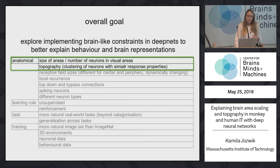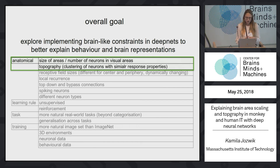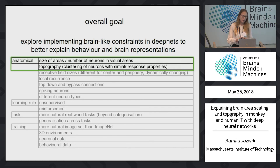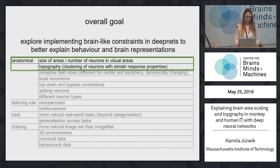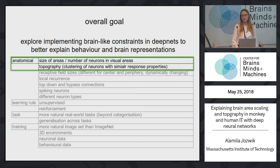The overall goal is to explore implementing brain-like constraints in deep nets to better explain brain and behavior. I talked about two anatomical constraints — number of neurons and topography — and how they affect dimensionality. We can also discuss other constraints later on. I'm happy to talk more about it during the breaks. Thank you for your attention.